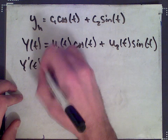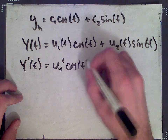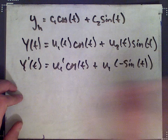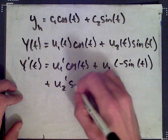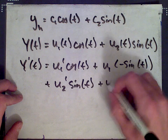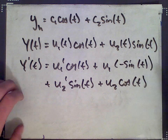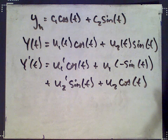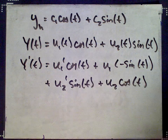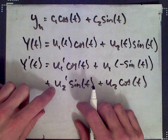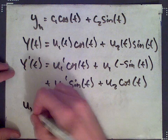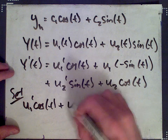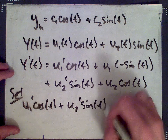So y prime of t ends up being u1 prime cos t plus u1 times the derivative of cos, which is negative sine t, plus u2 prime sine t plus u2 times the derivative of sine, which is cosine. Next we're going to set a restriction on u1 and u2. We have the freedom to choose one other equation, so we set u1 prime cos t plus u2 prime sine t equal to zero.